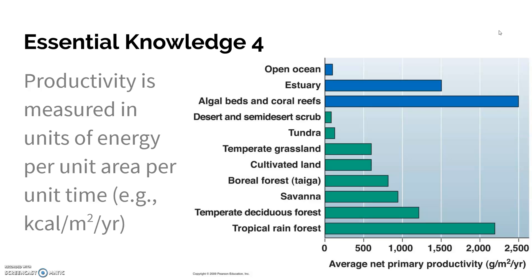It's a very simple math equation: GPP minus respiration equals NPP. We measure productivity in some unit of energy per unit area per unit time — for example, kilocalories per meter squared — so the amount of energy being produced in one meter square of land in a year.